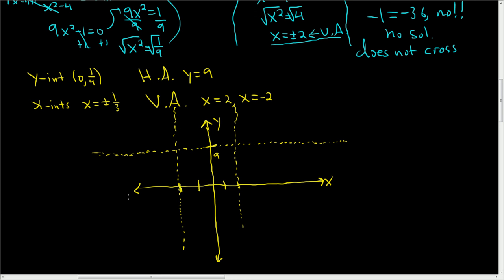So now I guess we'll plot the intercepts. So the y-intercept, when x is 0, y is 1 fourth. So maybe that's here. Now I'm not going to label it again because it's written here. So it's clear to the reader that you know what it is. And I think that's what matters. And now the x-intercepts are plus or minus 1 third. So maybe that's here, and maybe that's here. That's negative 1 third, and this one here is 1 third.